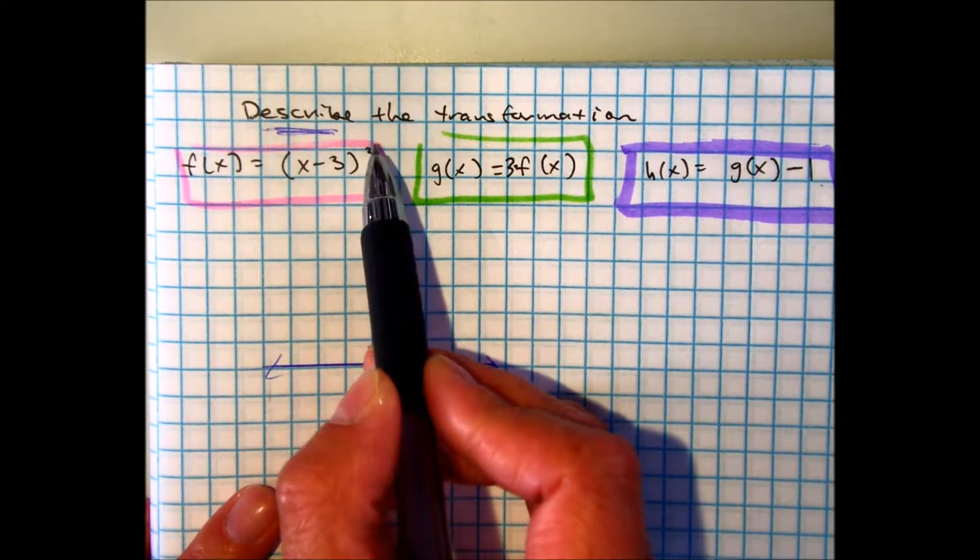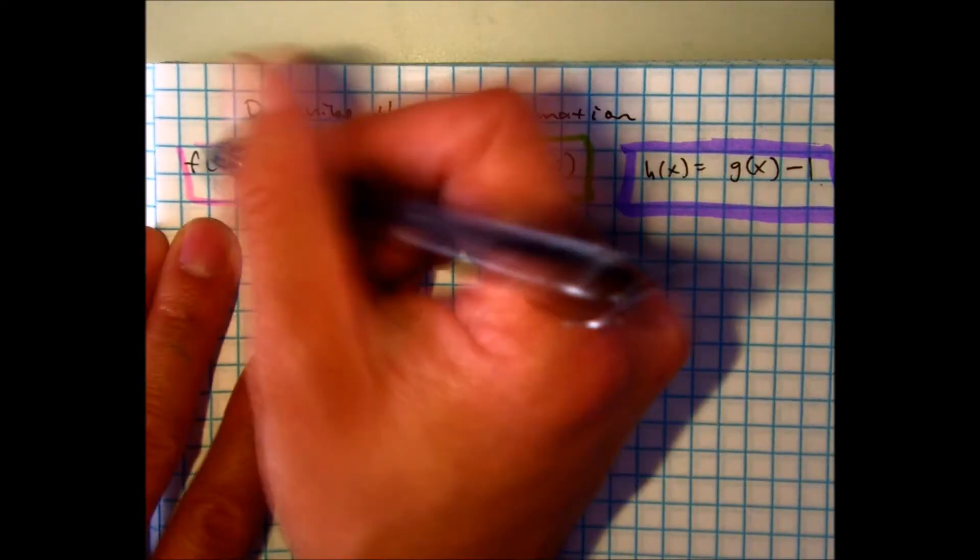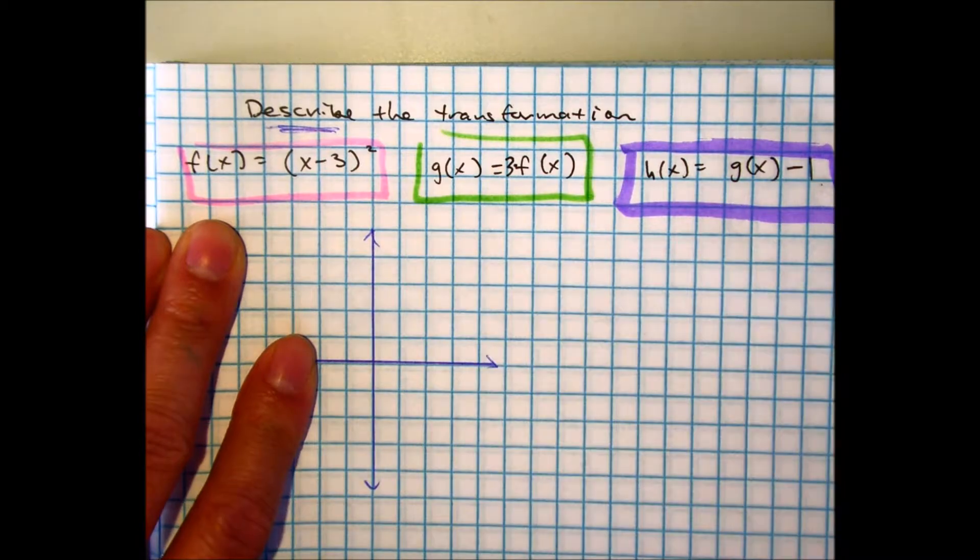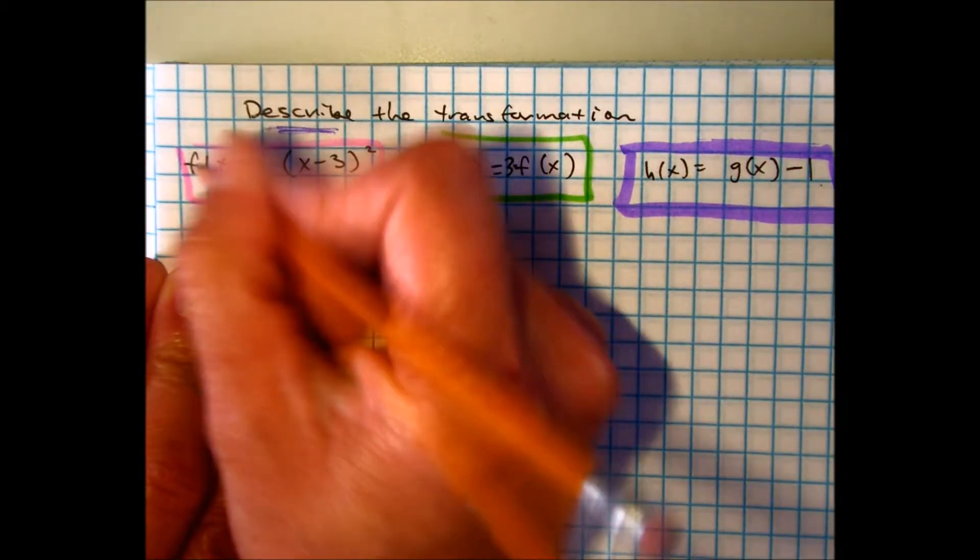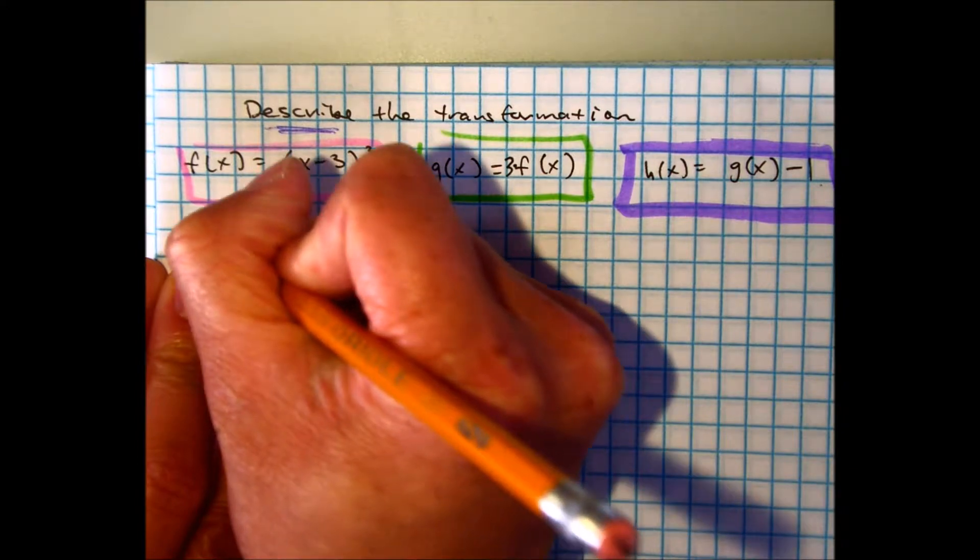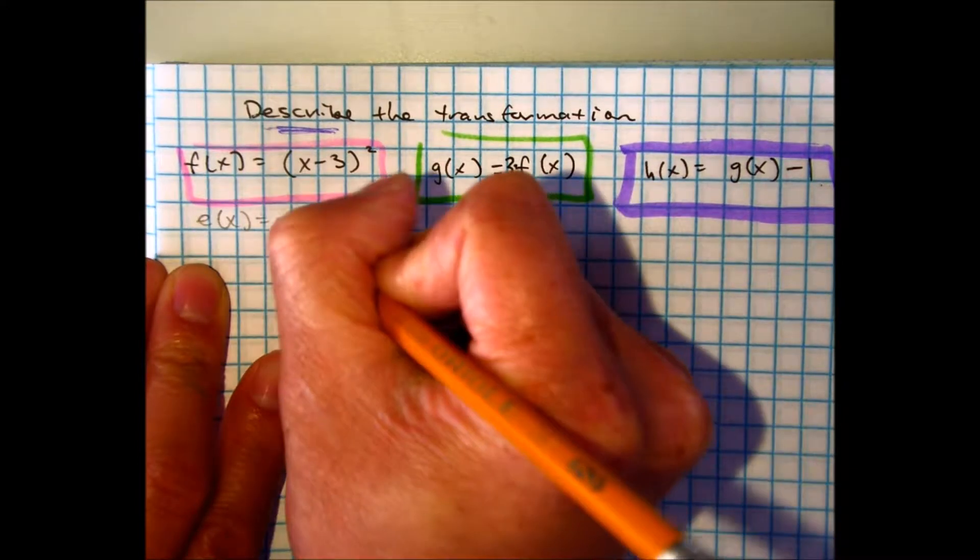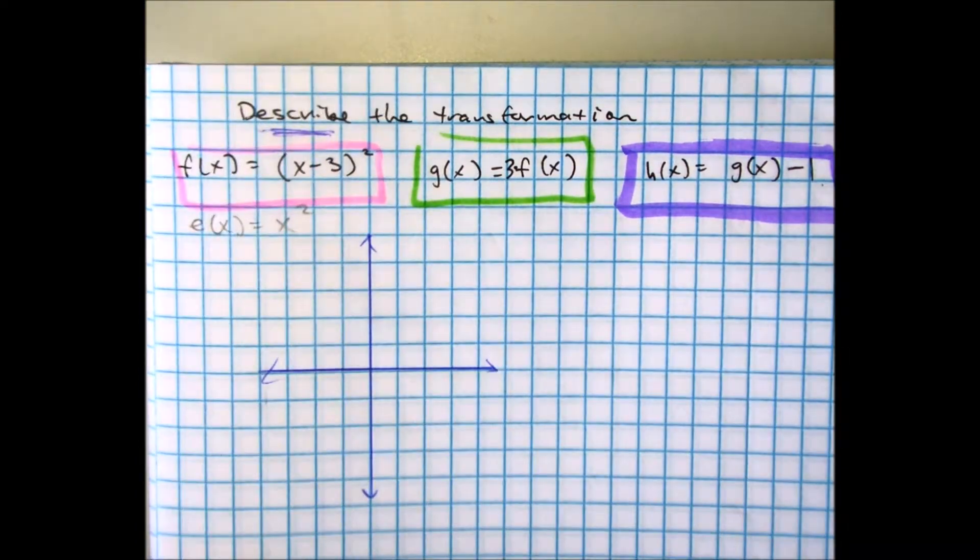If you notice that this is quadratic, let's just say we graphed the parent function, which would be something like E of X. E of X, the letter before this, would just be a parent function of X squared, right?